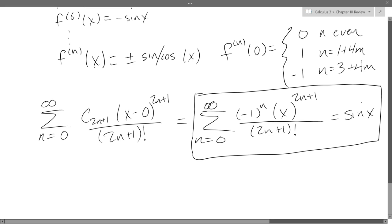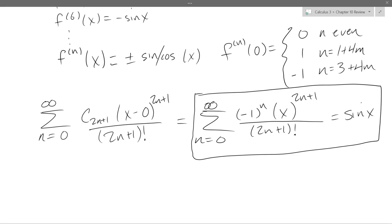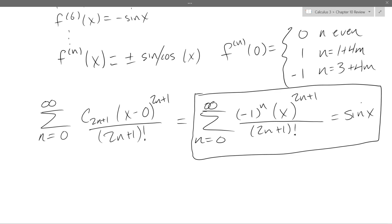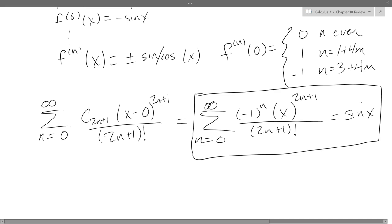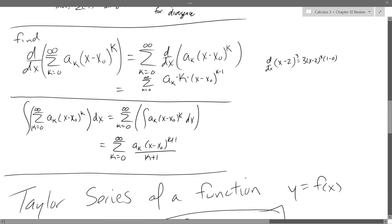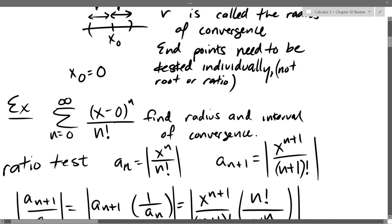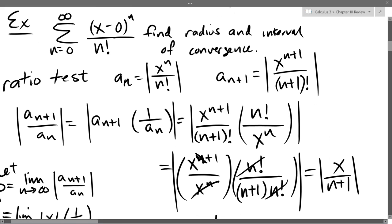We haven't done an interval of convergence yet. When in doubt, the ratio test is usually the right answer — probably 80% of the time. This is going to work almost exactly like the problem we did yesterday. You'll get a factorial on the bottom, and as I mentioned, factorials are super powerful — they beat everything else. So the ratio test will work out in a very similar way.